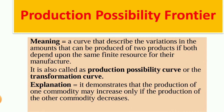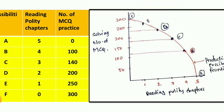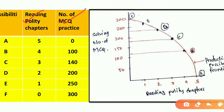First we are going to see an example, and then we will see the definition. For example, suppose you have to complete five chapters in a day, but your energy is limited. You need to take a combination — for example, you have to read chapters and also solve MCQs.